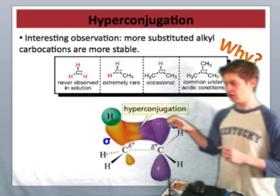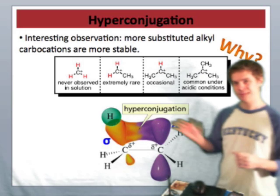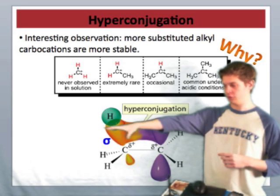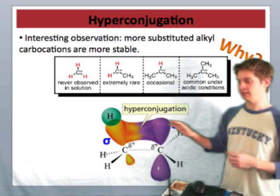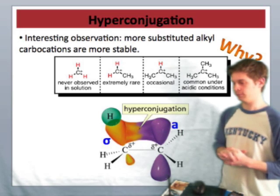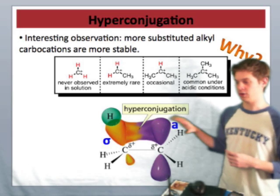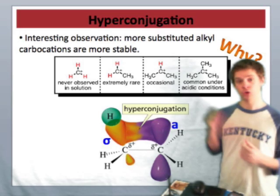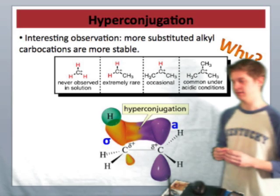So what you're seeing here on this diagram is pi-type overlap between the filled sigma orbital, in orange here, towards the empty purple p orbital. Or the sigma to a, as we call it, the empty atomic orbital of the cation. This donation effect stabilizes the cation.